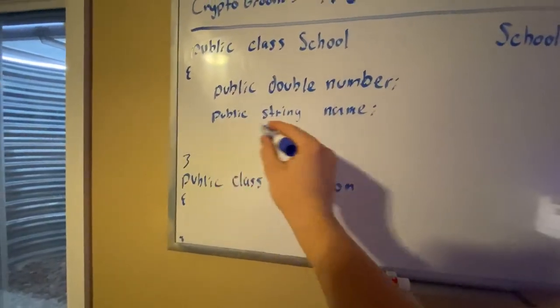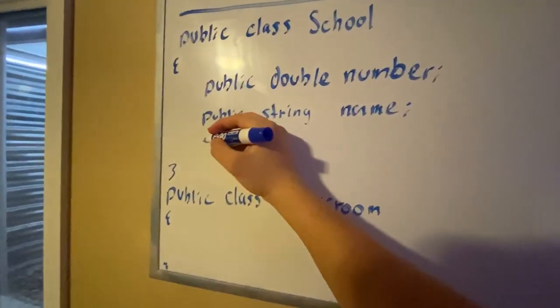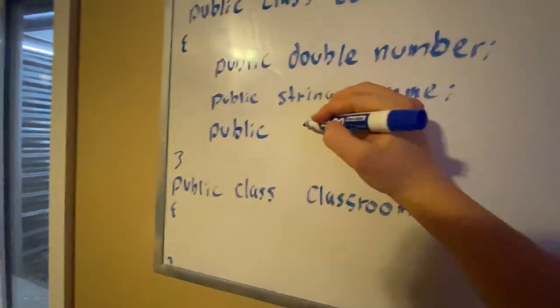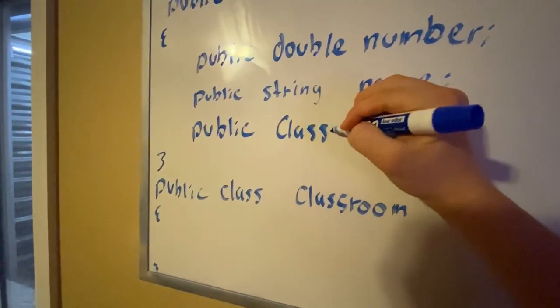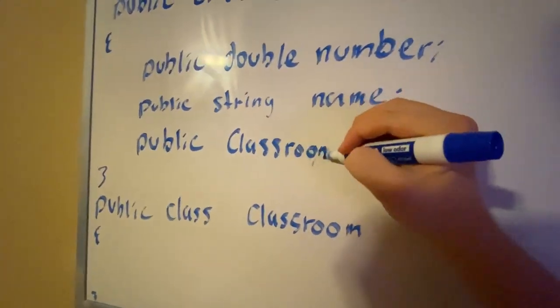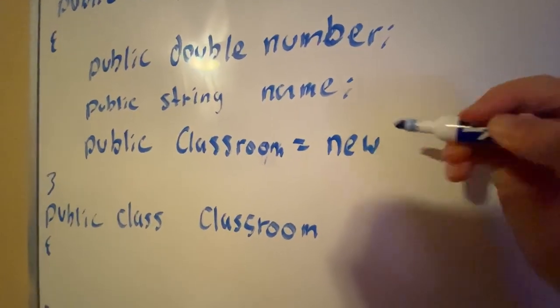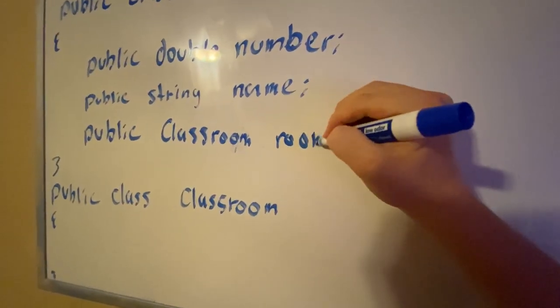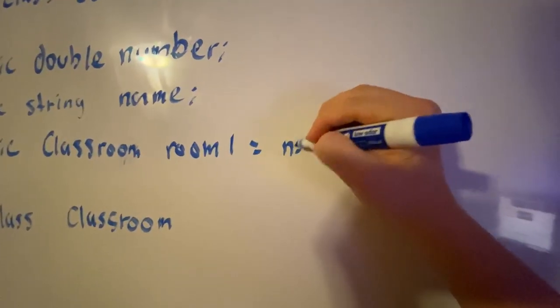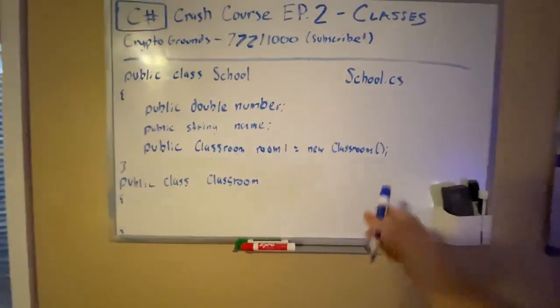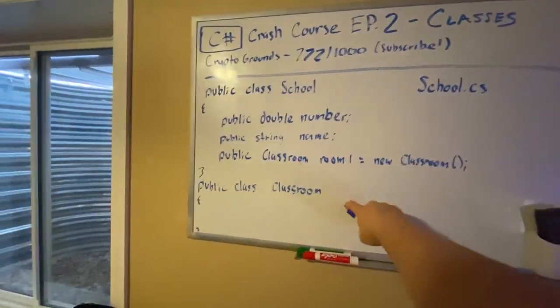We can create an object by doing this: public Classroom room1 equals new Classroom. That is how you declare a new object or how you create a new class type Classroom, just like that.